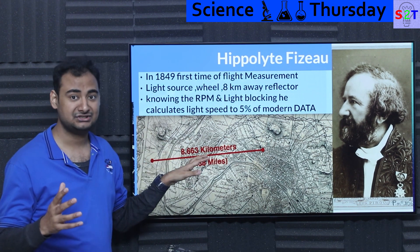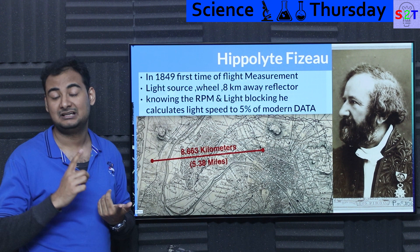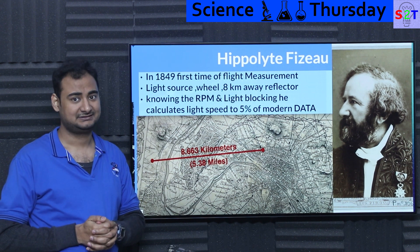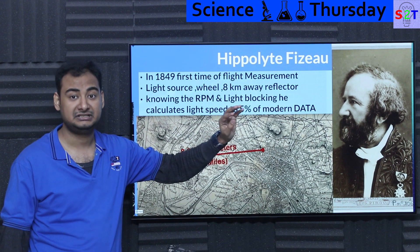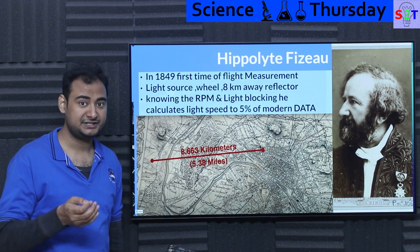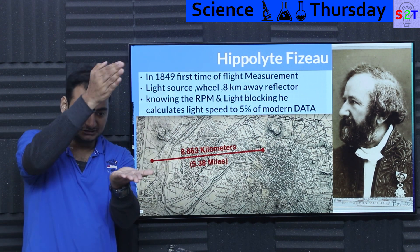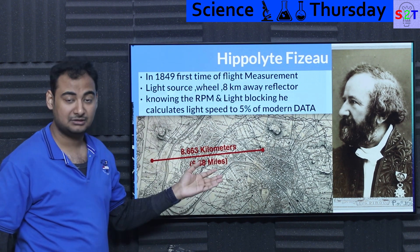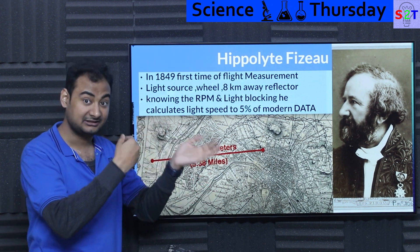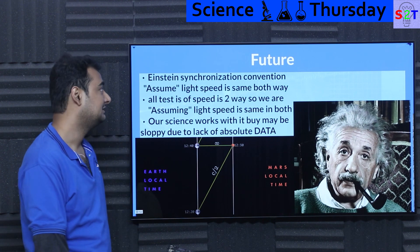Fizeau was within five percent of the modern accepted value — in 1849, with mechanical equipment. That is mind-bogglingly precise. To show how ingenious the methodology is: a modern individual replicated the experiment using a dremel, a tachometer, a camera, and a laser, and got almost 99% accuracy. If Fizeau had better clocks and equipment, his results would have been even more precise. His experimental design was quite sound, and people have successfully replicated it at shorter distances.